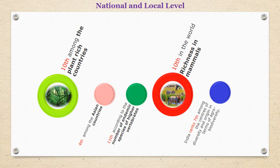Now, moving ahead with biodiversity at national level. As we are well aware, India is one among the top mega biodiversity nations. There is no denying fact that India holds a rich biodiversity across all its states and union territories, having numerous features which support its rich biodiversity, as discussed in the previous lecture. India is 10th among the plant-rich countries, 11th according to the number of endemic species of higher vertebrates, and ranks 10th in the world as far as richness in mammals is concerned.